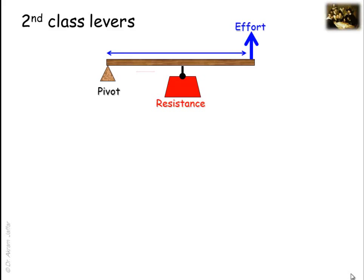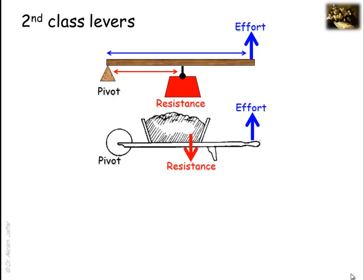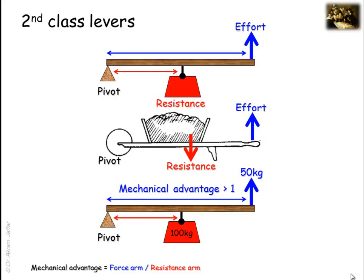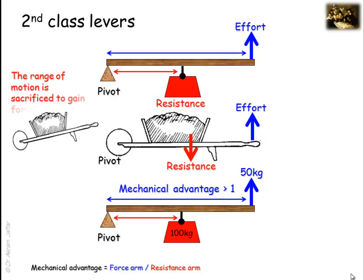In second-class levers, the resistance is located between the effort and the fulcrum. An example of a second-class lever is the wheelbarrow. Since the resistance arm is always less than the force arm, the mechanical advantage is always greater than one. However, in this arrangement the effort must always move a greater distance than the resistance — that is to say, the range of motion is sacrificed to gain force. This is the main function of this kind of lever: to gain force.